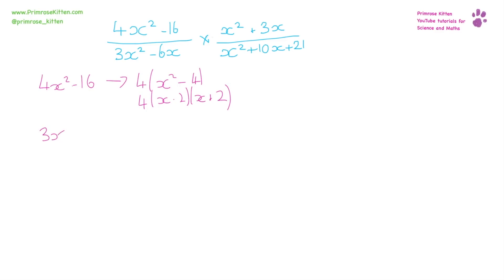Next one: 3x² - 6x. Again, we can take 3 out of everything here, giving us 3(x² - 2x).